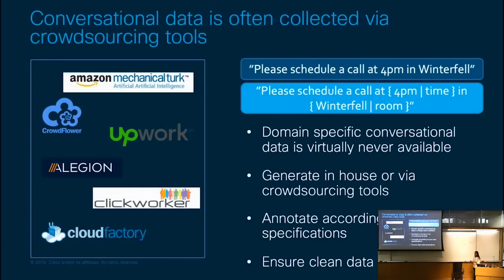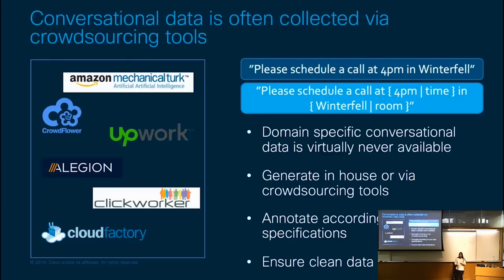In addition to domain metadata, you also need to collect conversational data — the actual natural language text of what a user would say, like 'please schedule a call at 4 PM in Winterfell.' In addition to the natural language text itself, you also need to collect labels for that text corresponding to the models in the pipeline. For instance, a label would indicate this is a schedule-meeting type of request, that 4 PM is a time, and that Winterfell is a conference room name. Since this data often doesn't exist anywhere already, we leverage crowdsourcing tools like Amazon Mechanical Turk and Crowdflower to generate both the natural language queries and the annotations and labels for those queries.